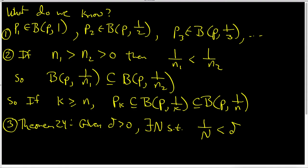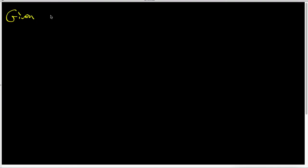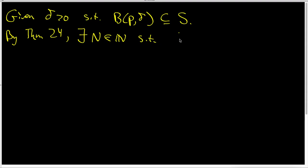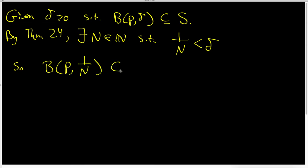Here's the formal proof. We're given that delta is bigger than zero such that our delta ball centered at p is indeed a subset of S. By Theorem 24, that variation on the Archimedean principle, there does exist a capital N inside the natural numbers such that 1 over capital N is smaller than delta. And that's enough to say that the delta ball centered at p of radius 1 over N is going to be a subset of the delta ball centered at p of radius delta.